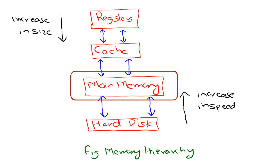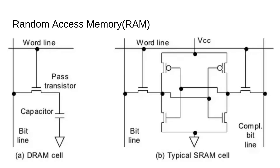Moving down the pyramid, we arrive at main memory, also known as primary memory. This is the computer's primary workspace where the operating system, applications, and current data reside. Main memory is primarily RAM. Random access means the CPU can access any location in memory directly without having to go through other locations. RAM comes in two main flavors: Static RAM and Dynamic RAM.